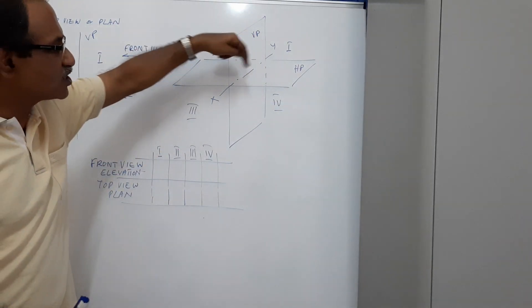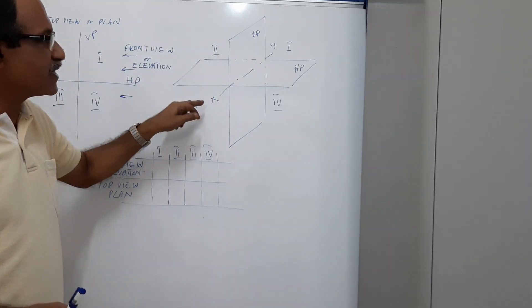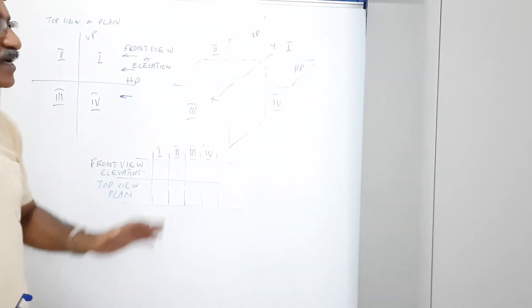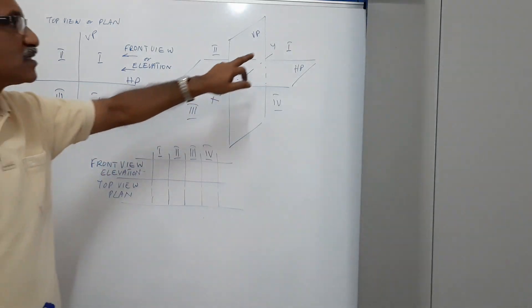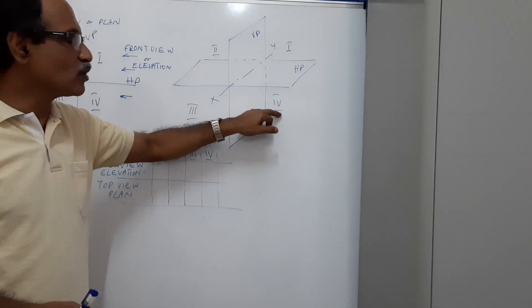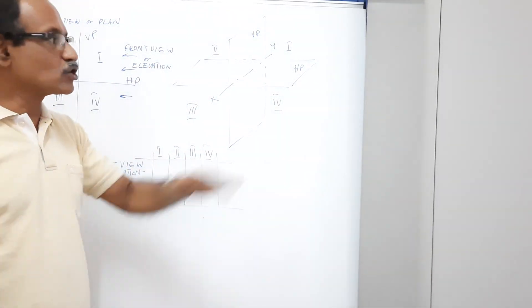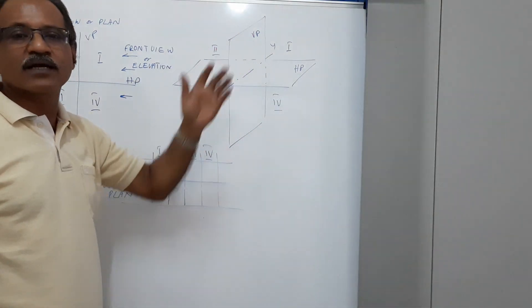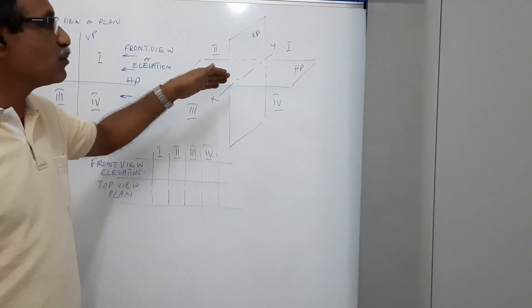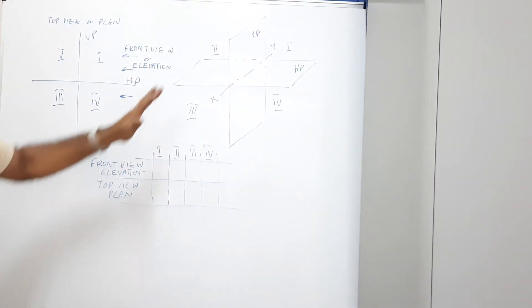You can see the two planes meet at 90 degrees. I have drawn a line here, and that line is the XY line, also called the ground line or reference line. From the four quadrants — quadrant one, quadrant two, quadrant three, quadrant four — we have these two transparent planes: the horizontal plane and the vertical plane.